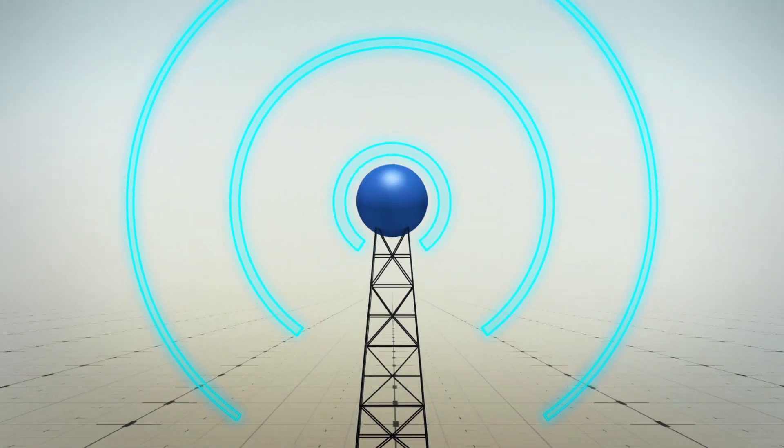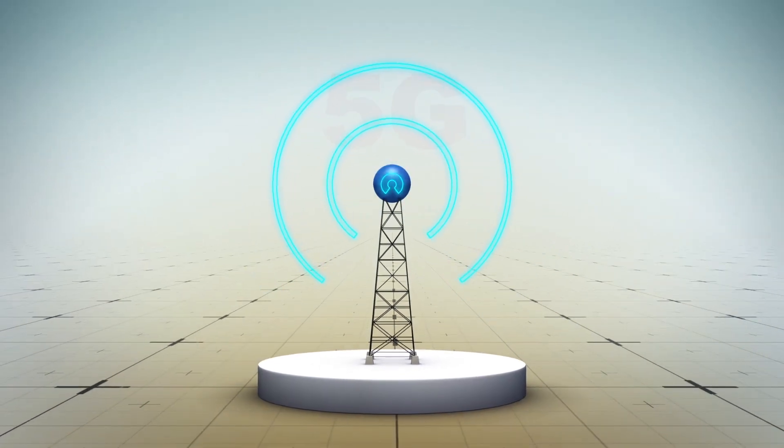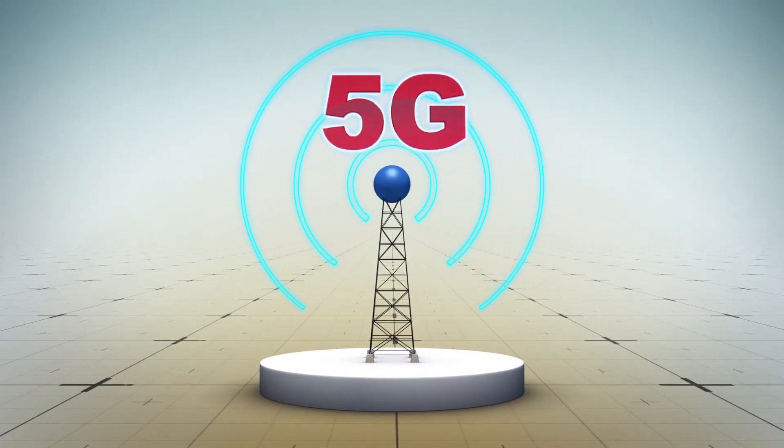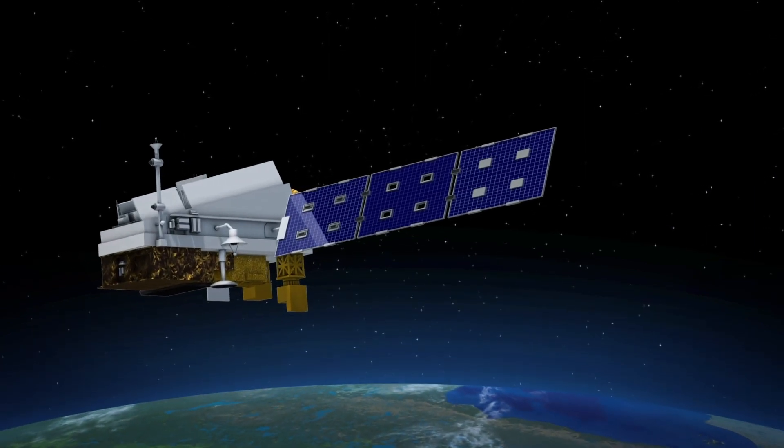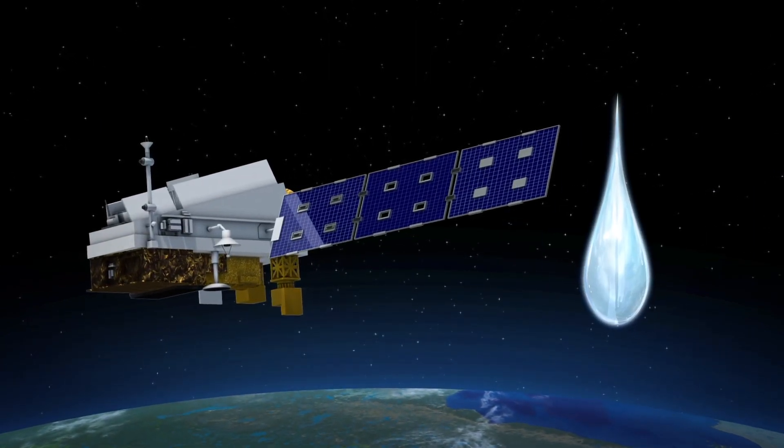5G wireless networks could interfere with technology that uses satellites to make accurate weather forecasts. According to a new study published in the journal Nature, weather satellites predict the weather by observing the amount of water vapor in the atmosphere.